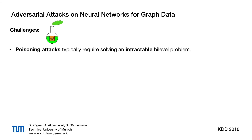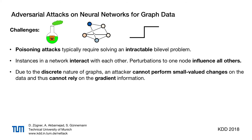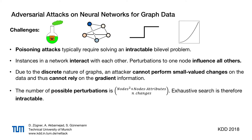Our adversarial attack algorithm tackles the following challenges. We perform poisoning attacks, that is, modify the training data of a model. There are complex interactions between the instances in a graph — structure or feature perturbations have an influence on all other nodes in the network. Since an edge can be either there or not, an attacker cannot perform small-valued changes as typical in continuous domains such as images and cannot rely on gradient information.